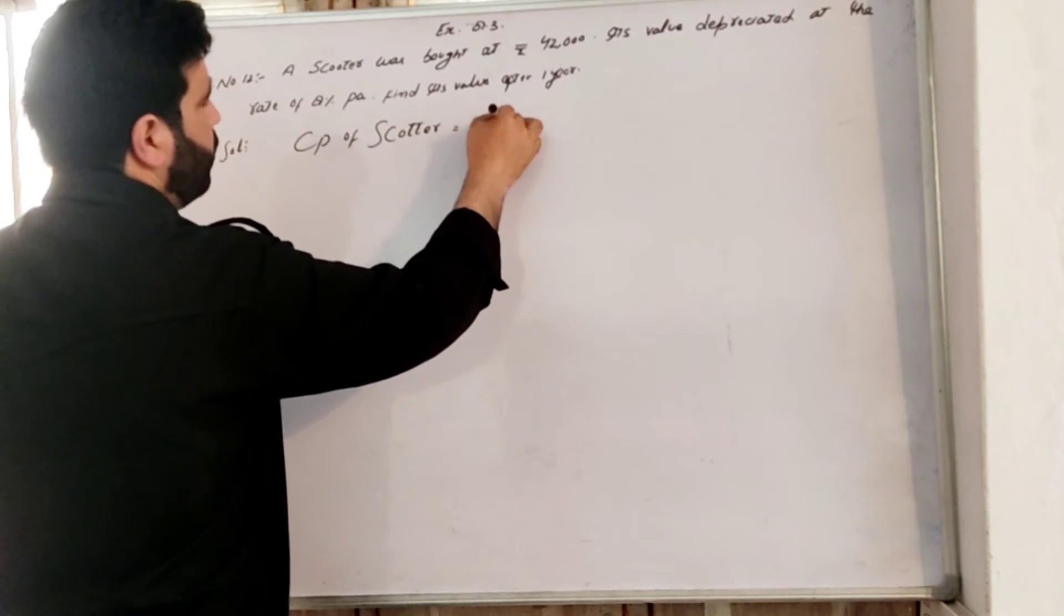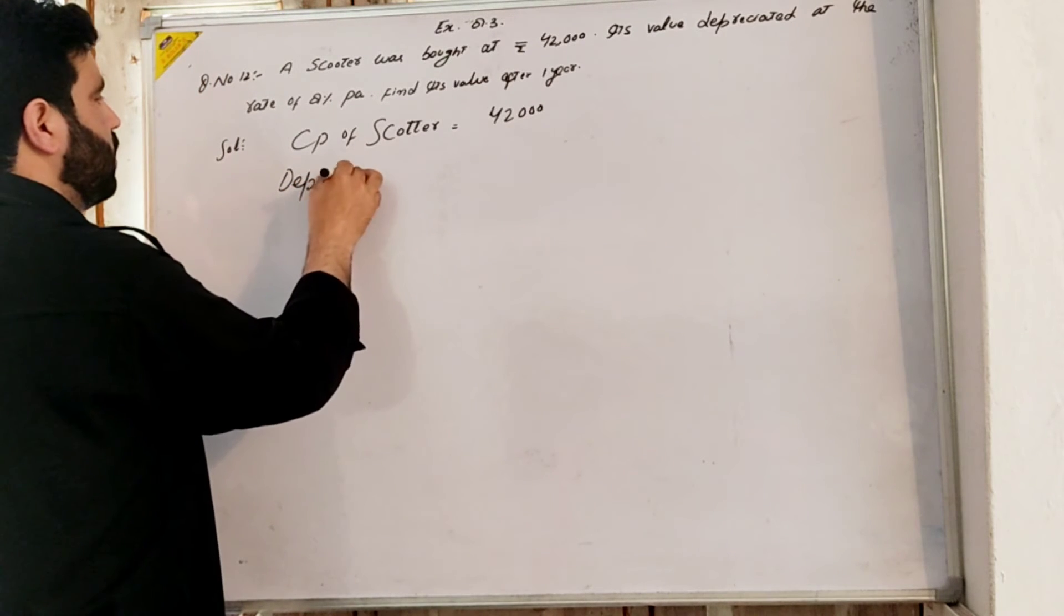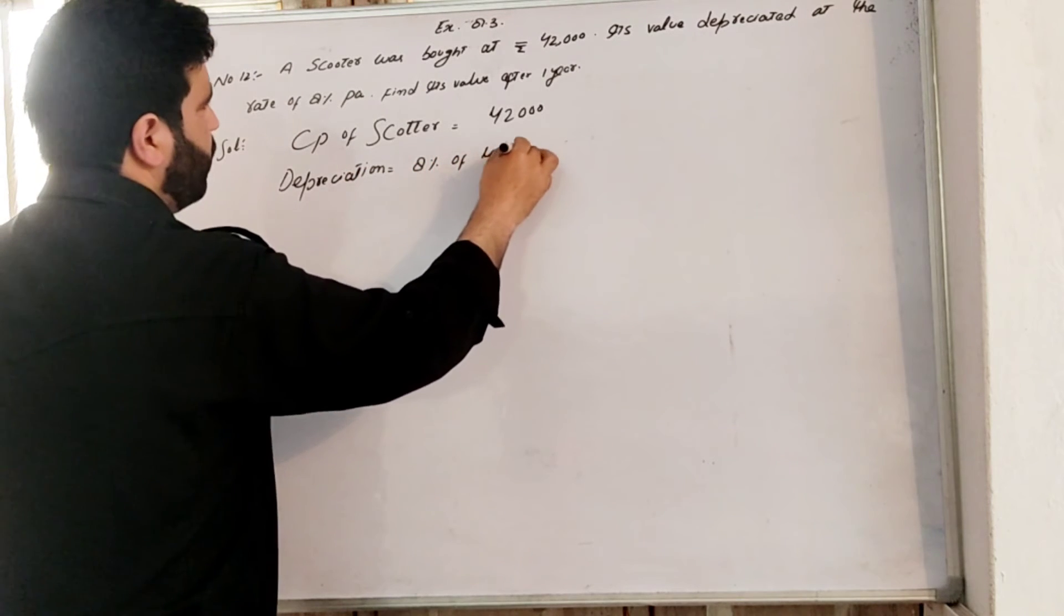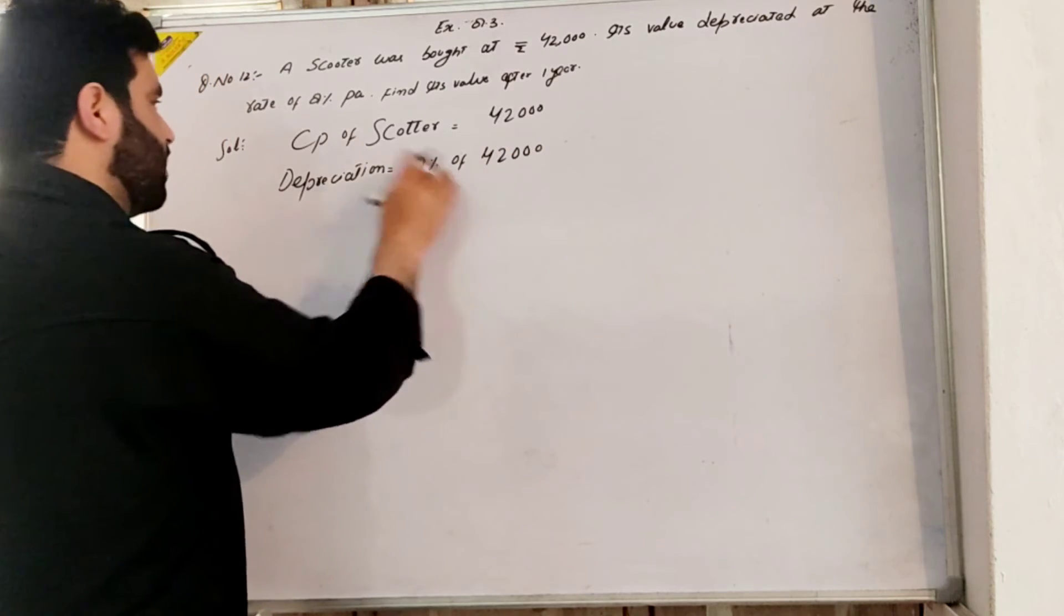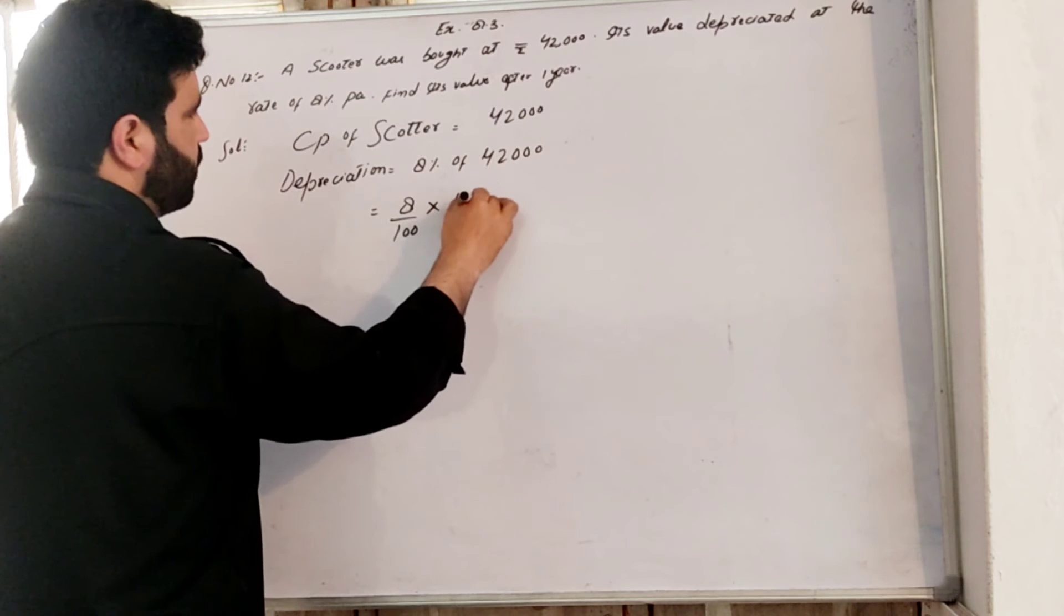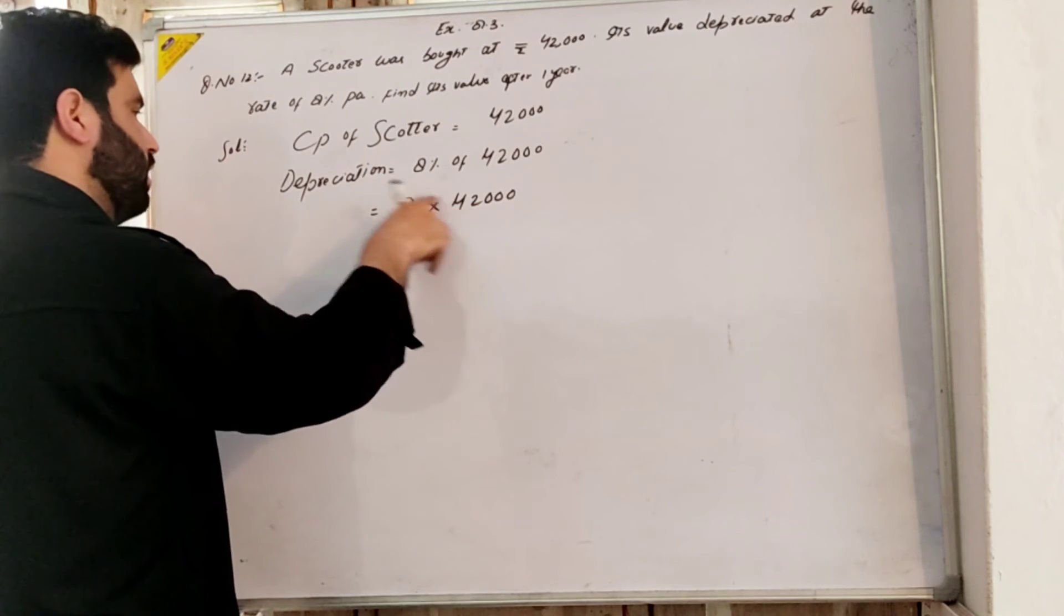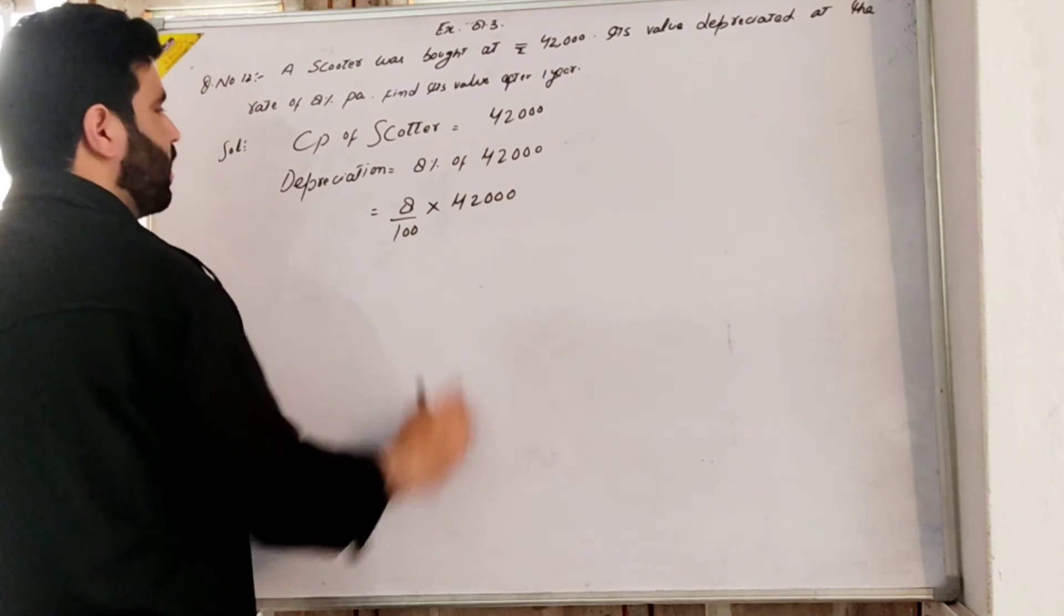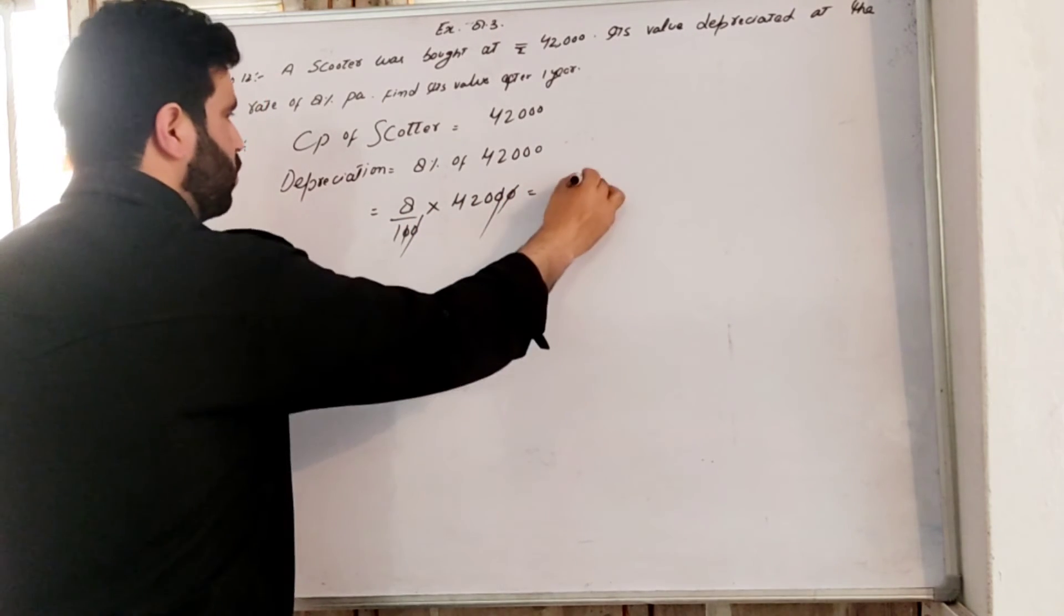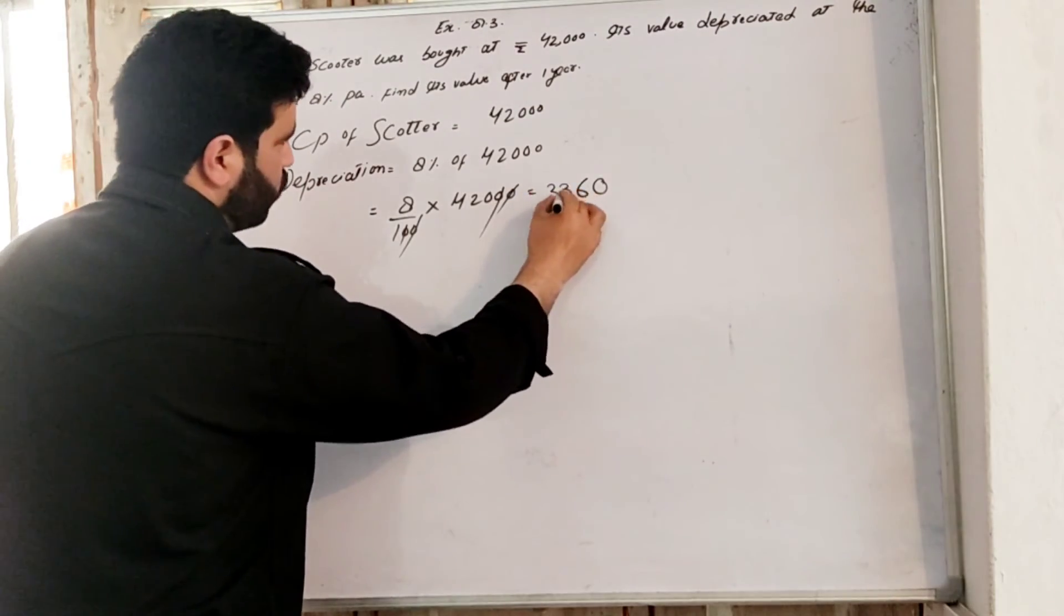The principle is equal to 42,000. Depreciation is 8 percent of 42,000. Using the formula: principle into rate into time. Time is one year. 42,000 times 8 divided by 100 equals 3,360.